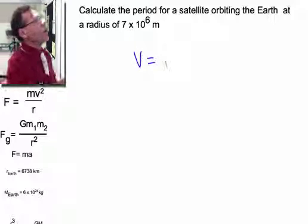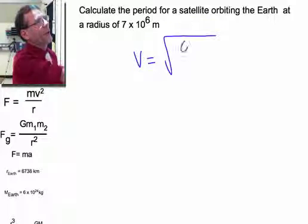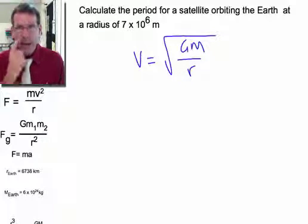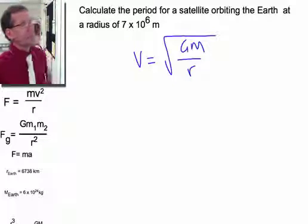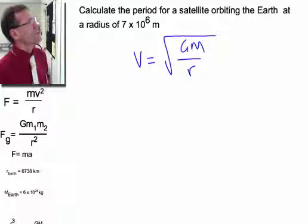we came up with the formula for the orbital velocity of a satellite. It's big G, big M on R, the square root of all of that. And if you remember, the mass of the satellite is kind of irrelevant out of that. So we've got the mass of the planet, big G, and the radius from the center.